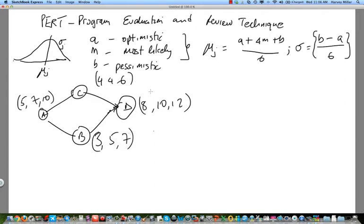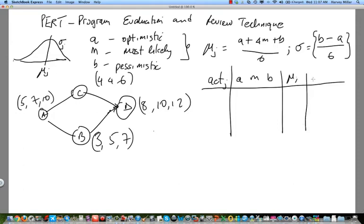So given this data, what we would do is create a table where we would say, okay, give me the activity, activity J. Give me your A, your M, your B. And then we would estimate our mu, estimate our variance. And so for example, A, we would say is five, seven, ten. But to estimate A, the mean of A, we would have to say five plus four times seven plus ten.